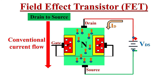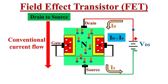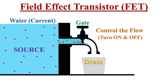ID is the current flowing into the drain terminal, and IS is the current flowing out of the source terminal, and here ID and IS are equal. Now if we apply a voltage between the gate and source terminal, the current flow between drain and source can be controlled. The working of JFET can be explained using a tap water analogy.